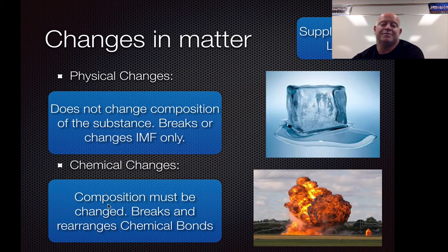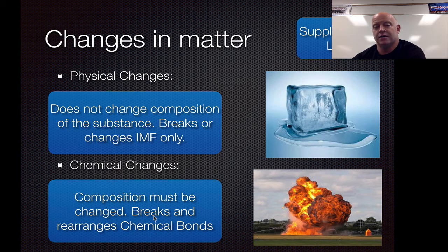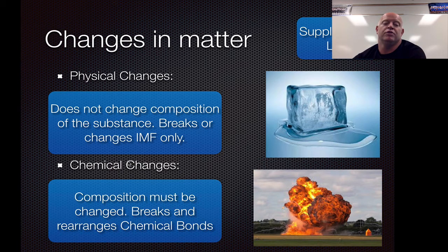For chemical changes, that composition must be changed. So you have to change what it is. If you have iron and iron rusts — that's called oxidation — it changes from iron to a compound called iron 3 oxide, or ferric oxide. So you've actually chemically changed it; you've brought it from being a single element into a compound with chemical bonds. When you do chemical changes, you have to break and rearrange those chemical bonds.